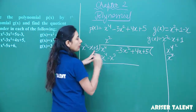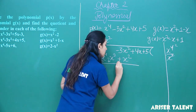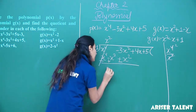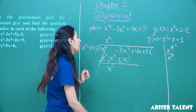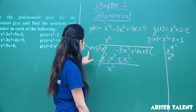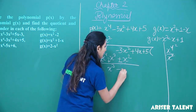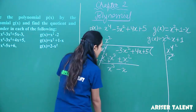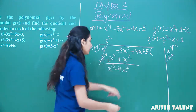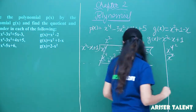Plus x squared — write it here. Now change the signs and cancel. x cubed remains as it is. Then minus 3x squared and minus x squared gives minus 4x squared. Plus 4x and plus 5 as well.